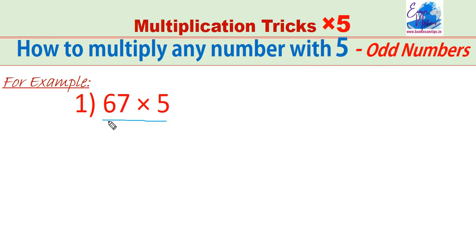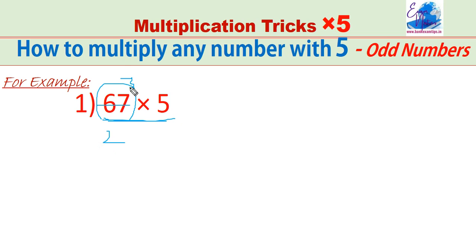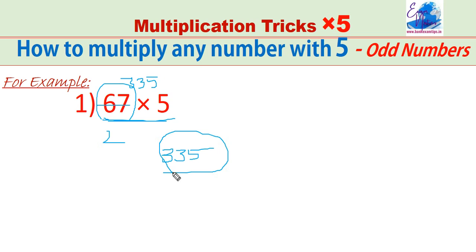The trick is different for odd numbers. Take 67 as an odd number example: 67 into 5. Make it half — divide by 2, we get 33 with remainder 1. Don't take the remainder, and put 5 at the end. 335 is the answer.